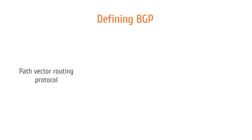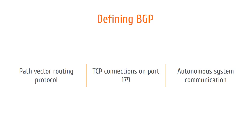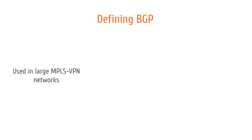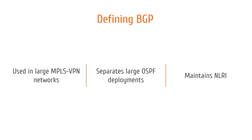BGP is a path vector routing protocol. It listens for TCP connections on port 179. BGP comes into the picture when communication is required between different autonomous systems. There are more uses of BGP when used in large MPLS VPN networks. It's also used to separate large OSPF domains. BGP uses routing information to maintain an information base of network layer reachability information, or NLRI, which it exchanges with BGP systems.